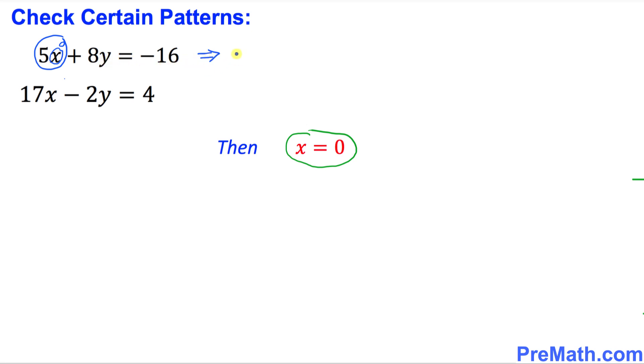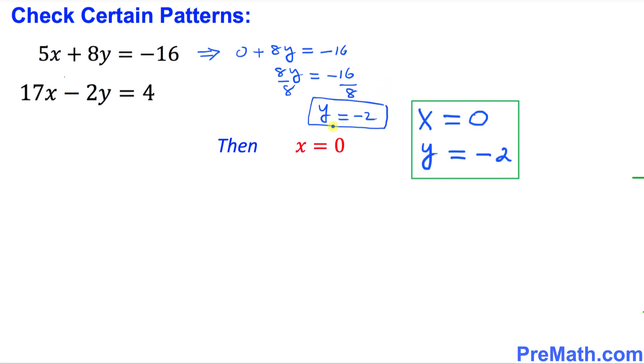That's going to give us 0 plus 8y equals negative 16. 0 plus 8y is the same as 8y equals negative 16. We're going to divide both sides by 8, so y is going to be negative 2. Thus our solution to this system of equations turns out to be x equals 0 and y equals negative 2.